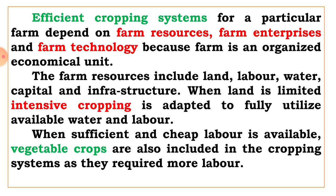When sufficient and cheap labor is available, you have to add vegetable crops in the cropping system, because vegetable crops require many laborers for carrying out different intercultural operations. With more labor available, growing vegetable crops gives maximum returns to the farmer.